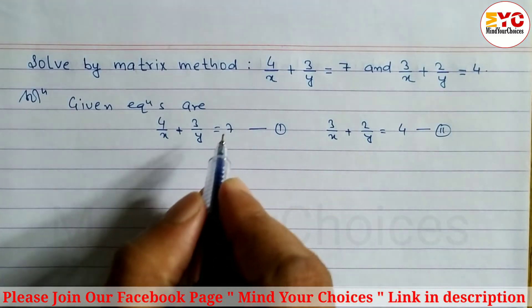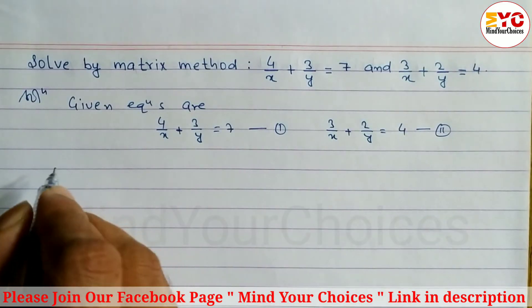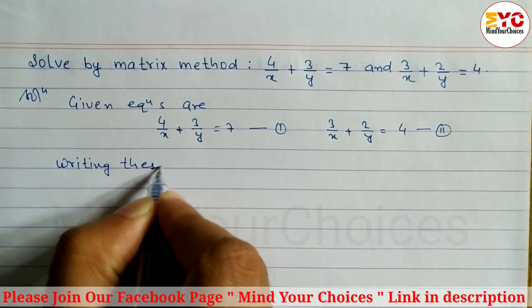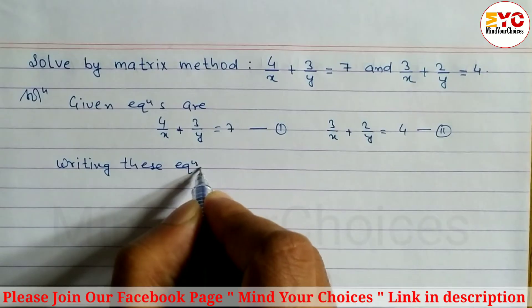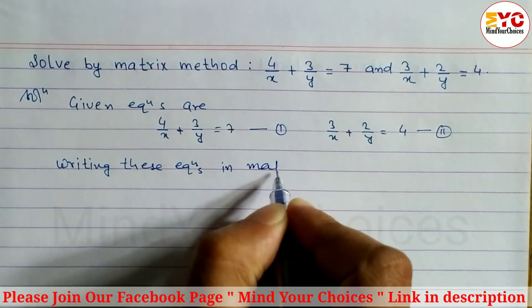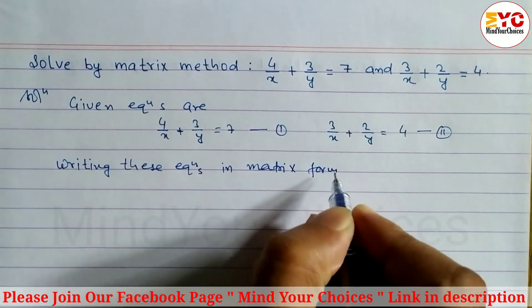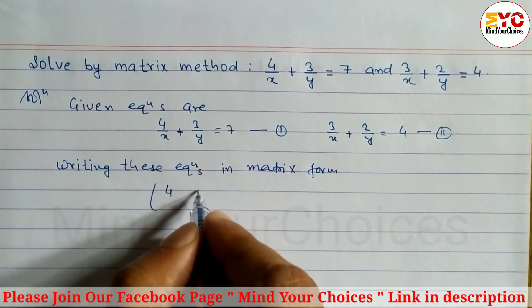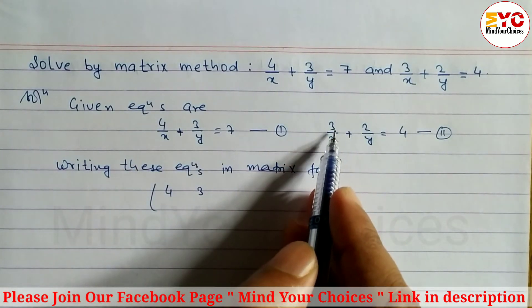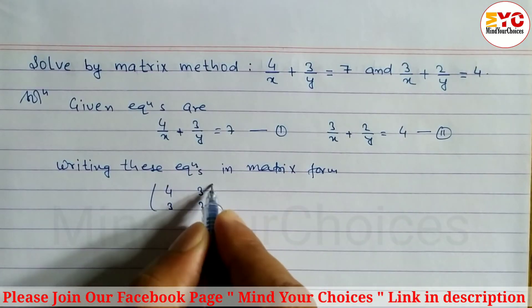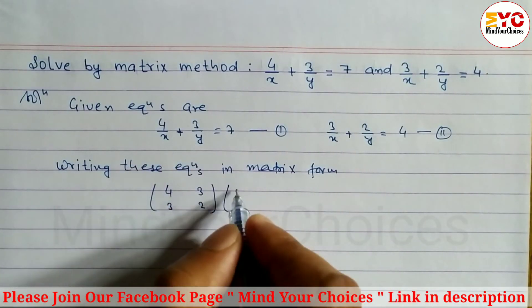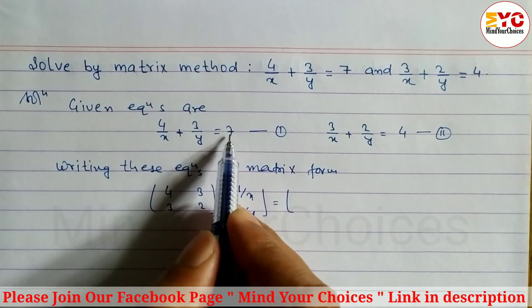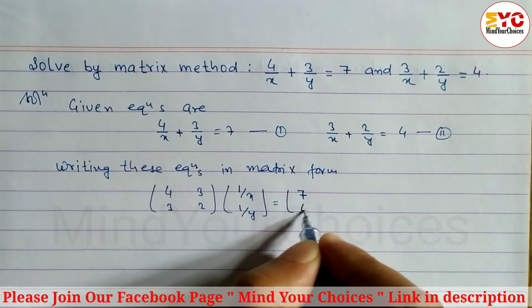We have to write both equations in the form of a matrix. Now look at here how to write the given equations in matrix form. What is the coefficient of 1/x? It is 4, so we write 4 here. Here is 3, so write down 3. After that, here is 3 and here is 2, so we write 3 and 2. Since x and y are in the denominator, we write 1/x and 1/y. The constant numbers are 7 and 4, so we write 7 and 4.